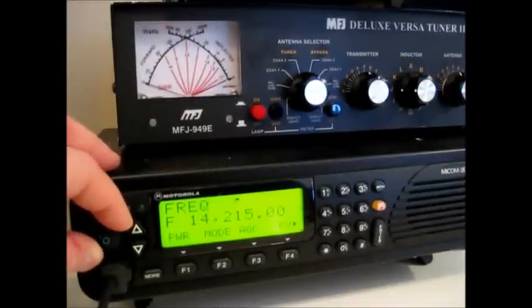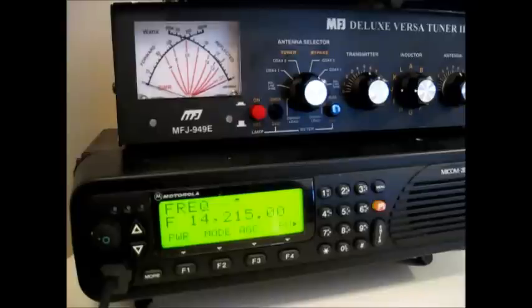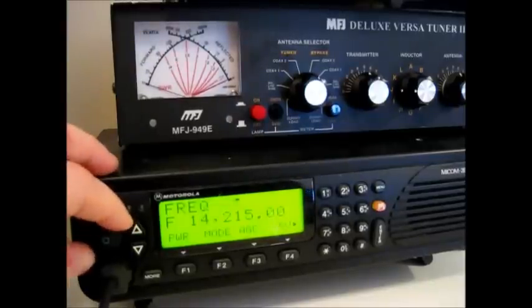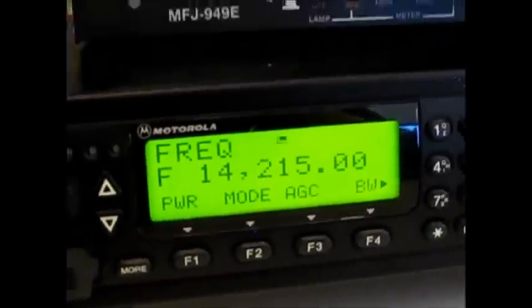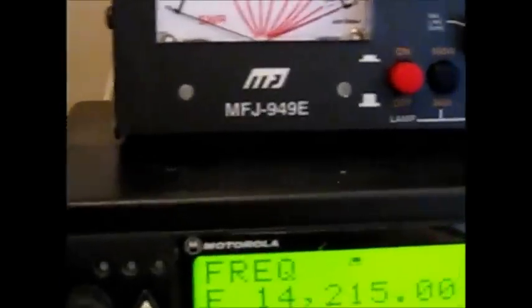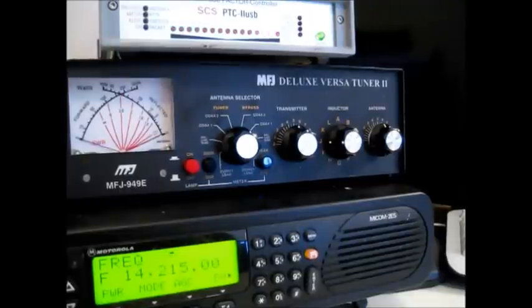Okay guys, we're back inside here and we're going to show how to manually tune an antenna. And I have my radio turned on here on the 20 meter band and right now it's on 14215 and I'm connected to the MFJ949E Deluxe Versatuner. It's probably one of the more popular antenna tuners out there.